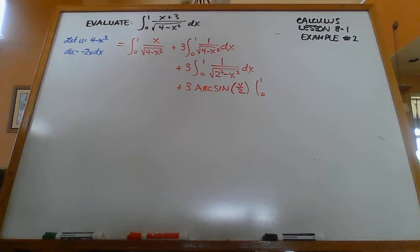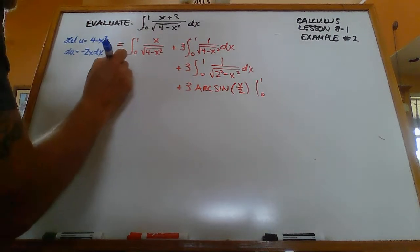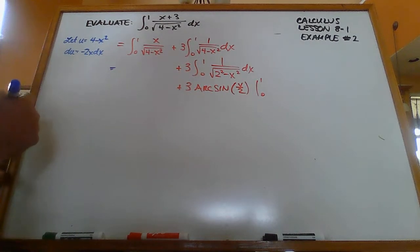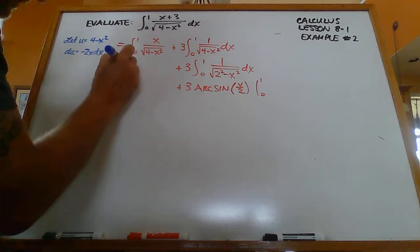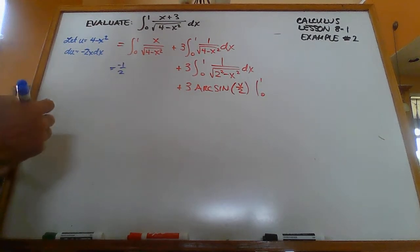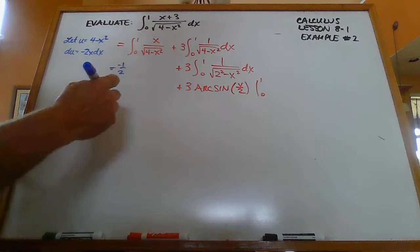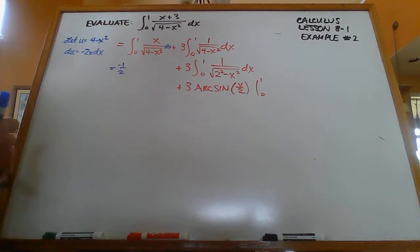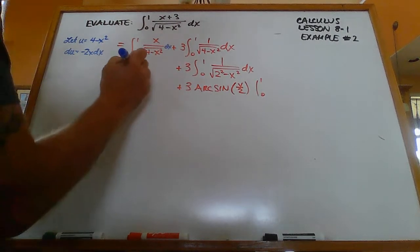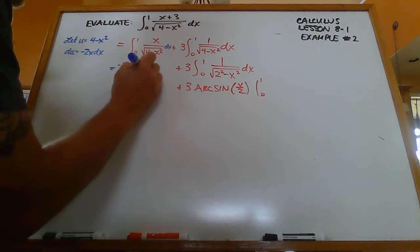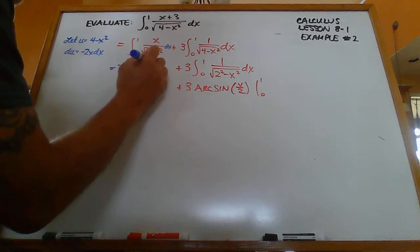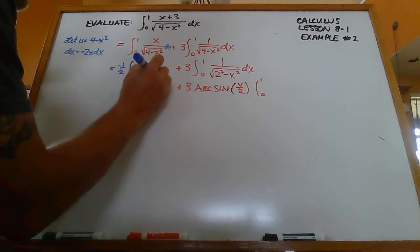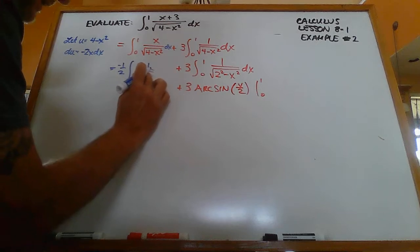And so what we'll need to have is a negative 1 half out here in front to cancel out that negative 2. And then this becomes the integral of 1 over the square root of u du.